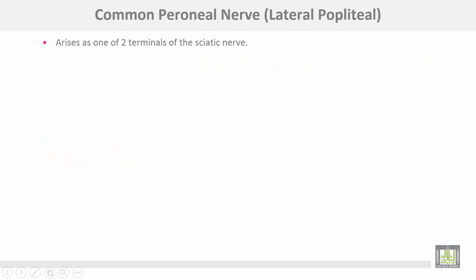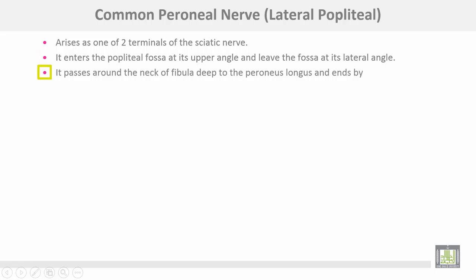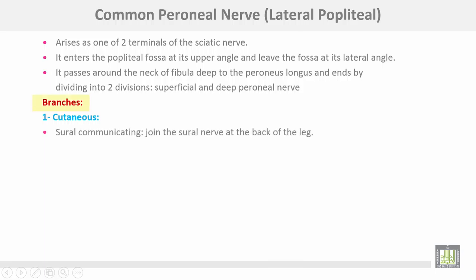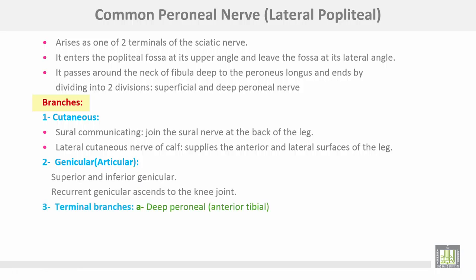The common peroneal nerve, or lateral popliteal nerve, arises as one of two terminals of the sciatic nerve. It enters the popliteal fossa at its upper angle and leaves at the lateral angle. It passes around the neck of the fibula deep to peroneus longus and ends by dividing into superficial and deep peroneal nerves. Branches include the sural communicating nerve, lateral cutaneous nerve of the calf, articular genicular branches, and terminal branches — deep peroneal and superficial peroneal (musculocutaneous) nerve.